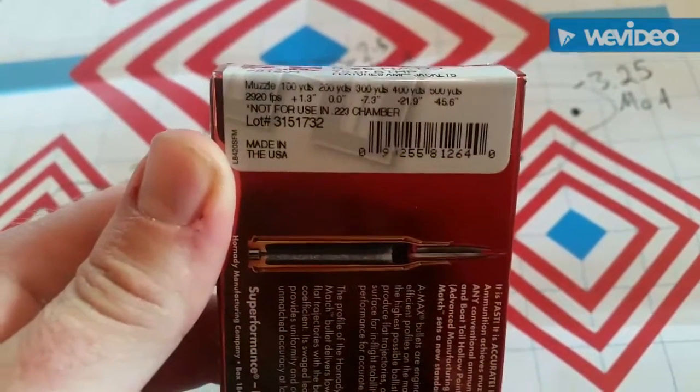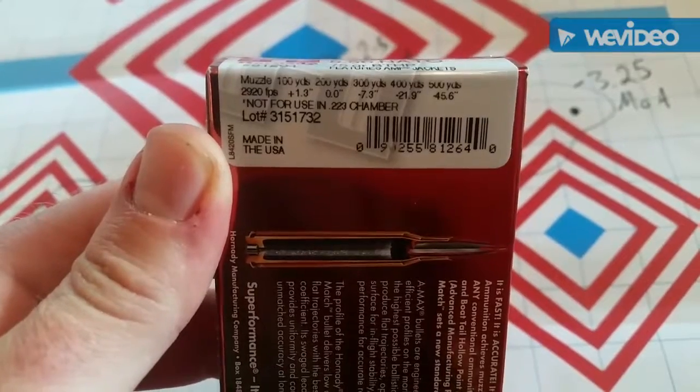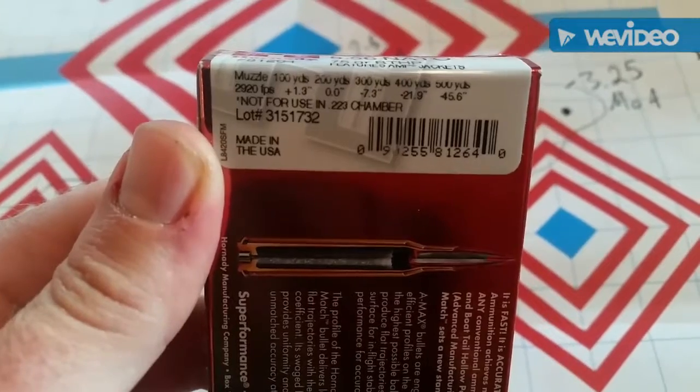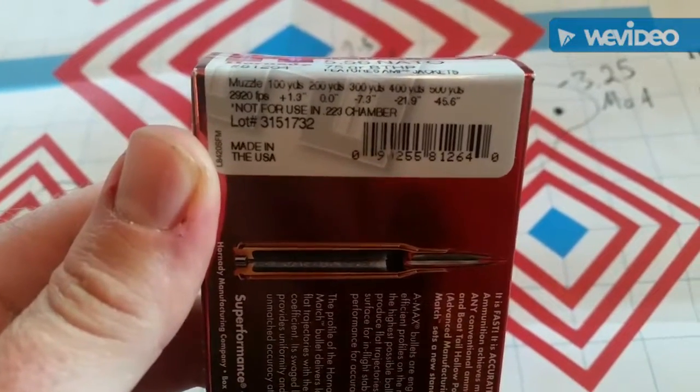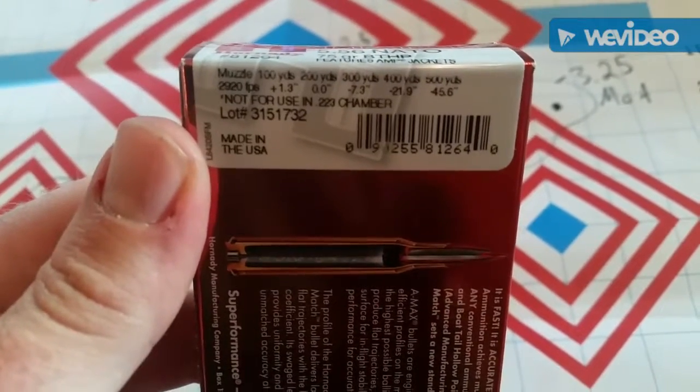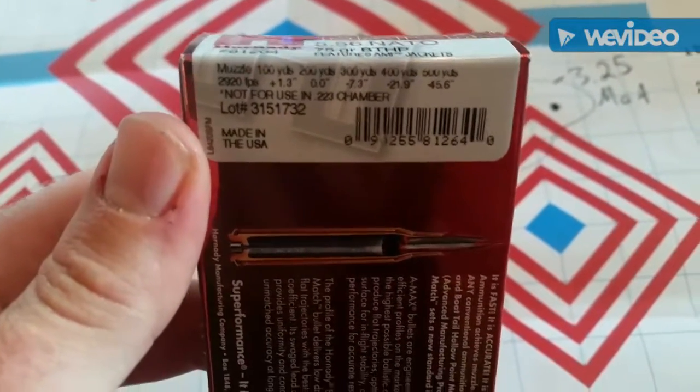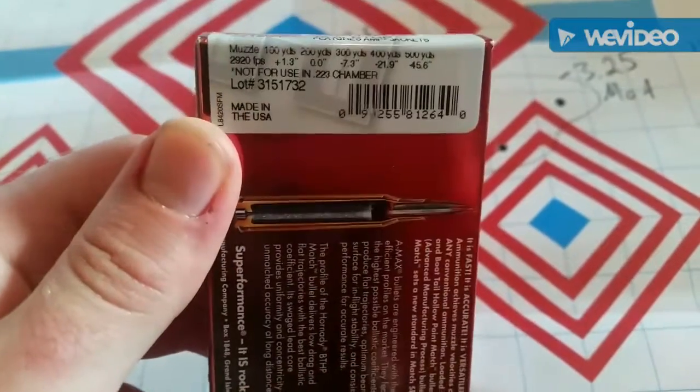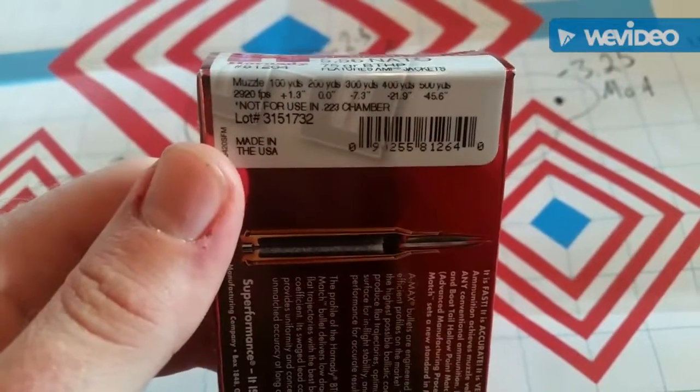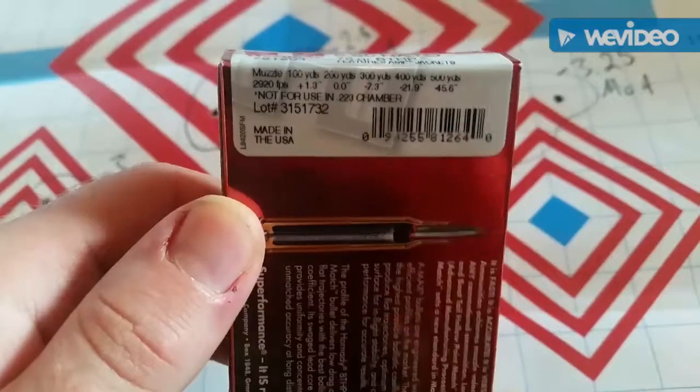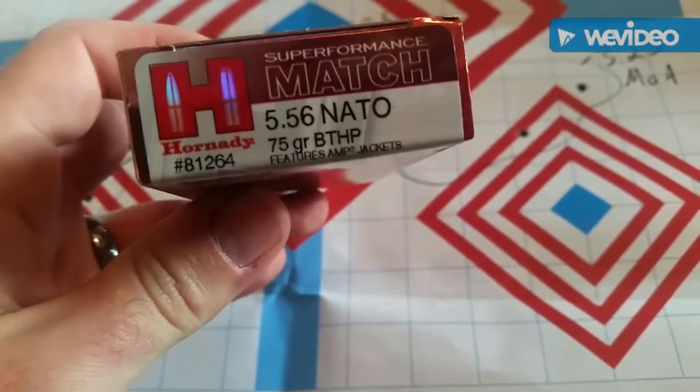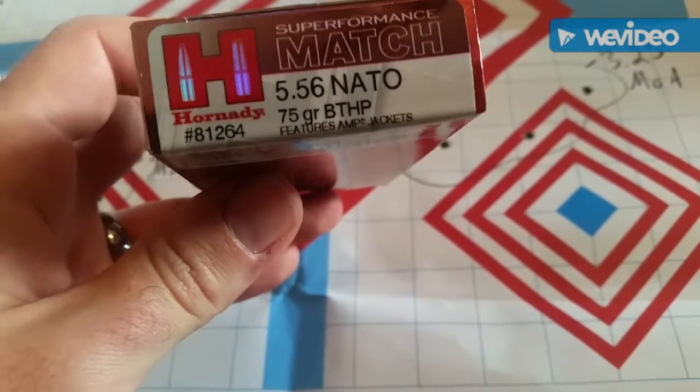According to the box, out of their test barrel it will push the 75 grain projectile to 2920 feet per second. I like that it's got a little note right there: not for use in a 223 chamber. So for once putting a 556 in 223 may not be advisable. This is the only time I've ever seen that note before.